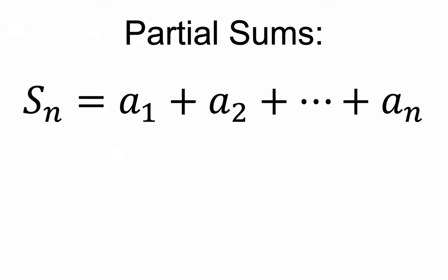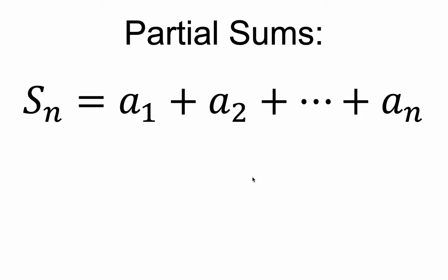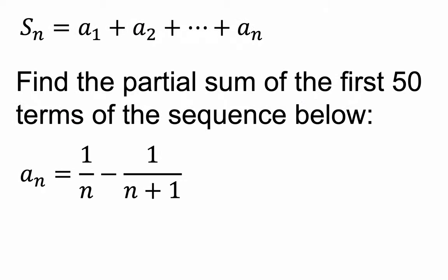Let's look at a partial sum problem. We use the notation S subscript N — the partial sum up to the nth step — meaning you add up the different terms in the sequence up to the nth step. If I wanted the third partial sum, I'd add the first three terms. If I wanted the tenth, I'd add up to the tenth term. The fun way to think about this is: what patterns can we find that make the adding easier? What cancels? Pause the video — here's a formula for the nth step. If we did this for the first 50 terms, what would that partial sum be?